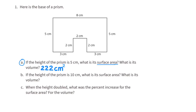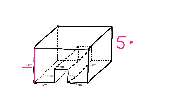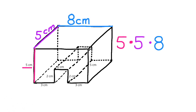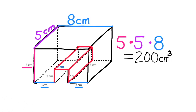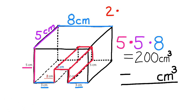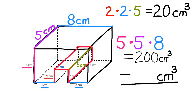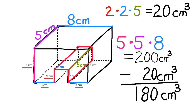Next, we need to find the volume. 5 times 5 times 8 equals 200 centimeters cubed. And we need to subtract 2 times 2 times 5, or subtract 20 centimeters cubed. The volume of this prism is 180 centimeters cubed.